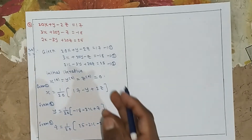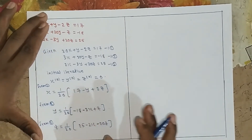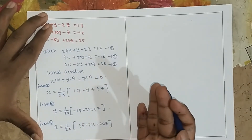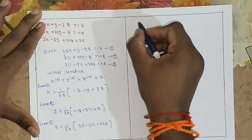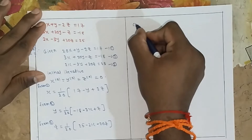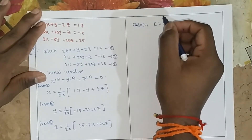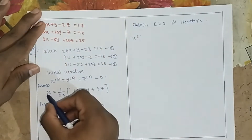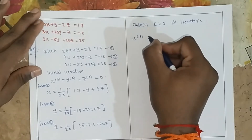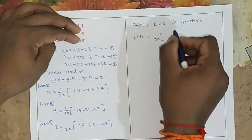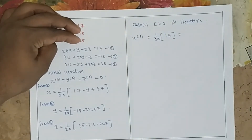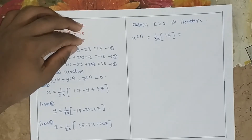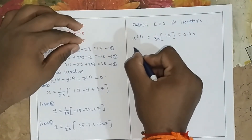Now we write the initial iteration. For case 1, k equals 0, we compute the first iterative values. x(1) equals 1 by 20 into 17, which gives 17 by 20, so x(1) equals 0.85.